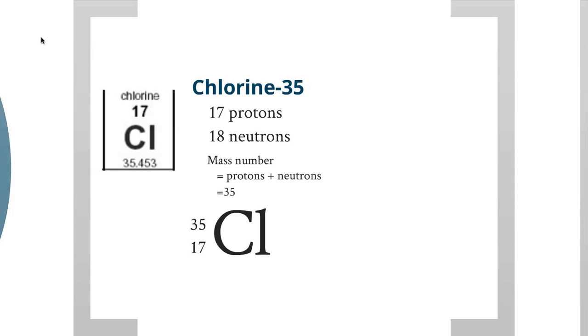And that is the nuclear notation, the nuclide notation of chlorine-35. A mass number of 35, 17 protons (that's the atomic number), and the element symbol is Cl. That's how you write in nuclide notation or AZX notation.